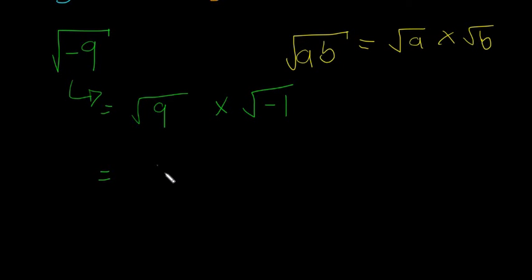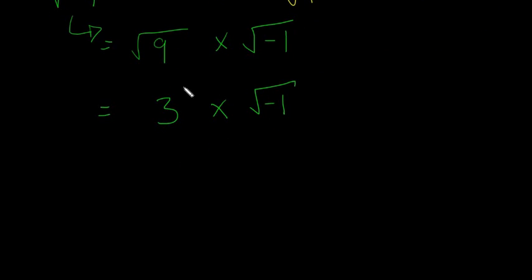The square root of 9, we know, is 3. So we have 3 by the square root of minus 1. Now we still have the same problem with the square root of minus 1. There's nothing that the square root of minus 1, there's no answer to it.